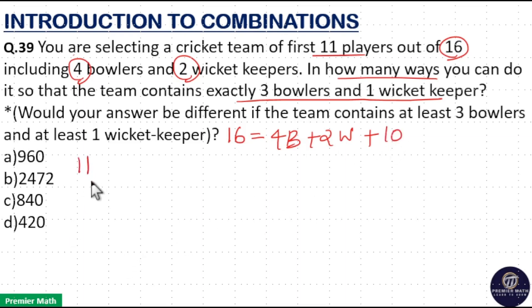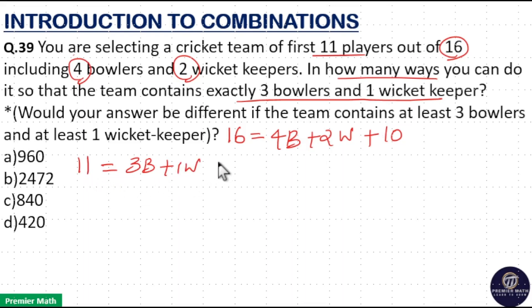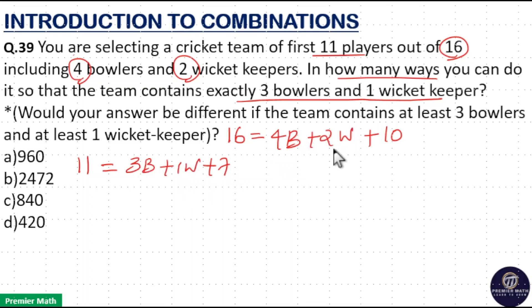We need to form a team of 11 which should contain exactly 3 bowlers and 1 wicket keeper. So the remaining spots are 11 minus 4, which is 7 other players. We can select the 3 bowlers from the available 4 bowlers, 1 wicket keeper from the 2 wicket keepers, and 7 other players from the 10 other players.